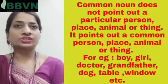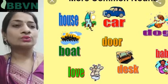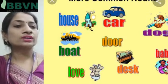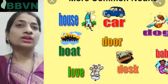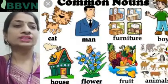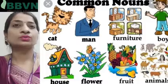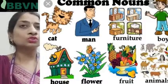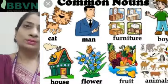For instance, pictures show common nouns like: house, car, dog, door, boat, desk, baby. Other pictures show: cat, man, furniture, boy, house, flower, fruit, animals. All the terms shown in these pictures are common nouns.